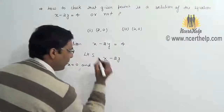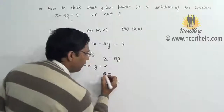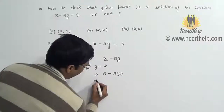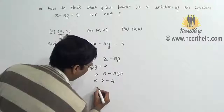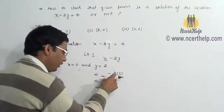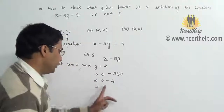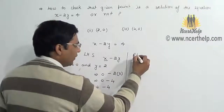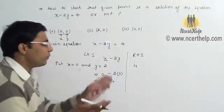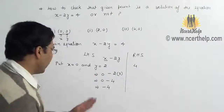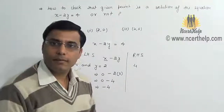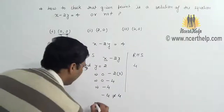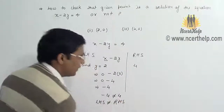So here, X equals 0 and Y equals 2. Plugging in: 0 minus 2 times 2 gives 0 minus 4, which equals minus 4. And what is the value of RHS? RHS is 4. So LHS is minus 4 and RHS is plus 4. We can see minus 4 is not equal to plus 4, or we can say LHS is not equal to RHS.